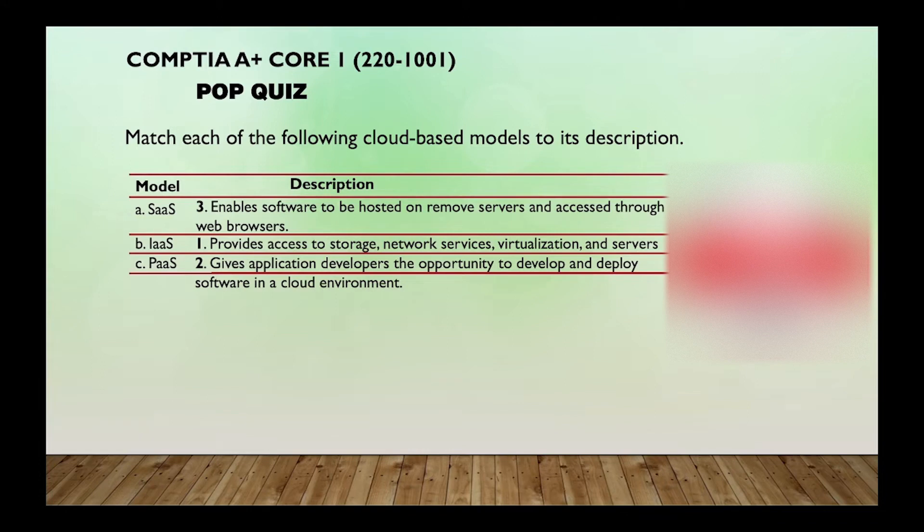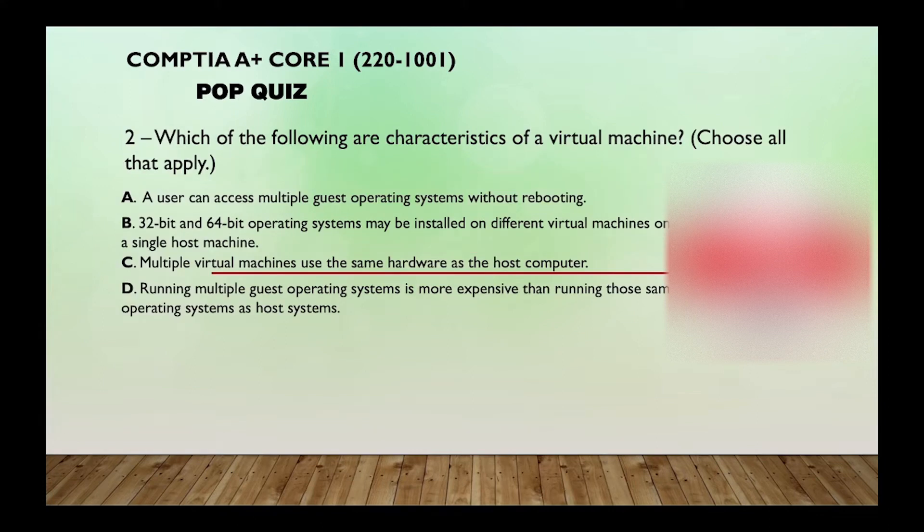Number two, which of the following are characteristics of a virtual machine? Choose all that apply. A, a user can access multiple guest operating systems without rebooting. B, 32-bit and 64-bit operating systems may be installed on different virtual machines on a single host machine. C, multiple virtual machines use the same hardware as the host computer. D, running multiple guest operating systems is more expensive than running those same operating systems as host systems.